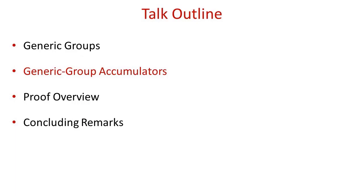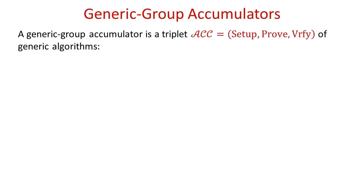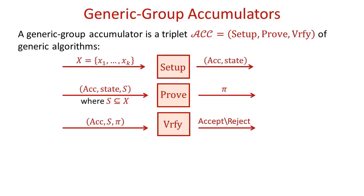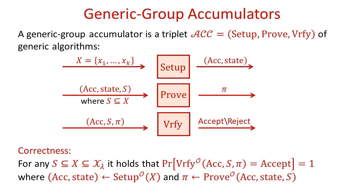We can now discuss accumulators in this model. A generic group accumulator is a triplet of generic algorithms. The algorithm Setup receives as input a set X and outputs an accumulator ACC and a state. The algorithm Prove receives as input an accumulator ACC, a state, and a set S, and outputs a proof π. The algorithm Verify receives as input an accumulator ACC, a set S, and a proof π, and outputs accept or reject.